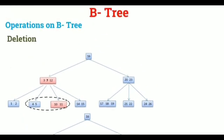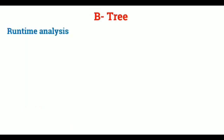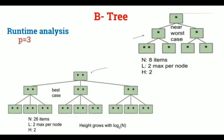Excellent. Now, you have known how operations can be done on B-tree. Now, let's analyze the runtime of B-tree. Here we have 2 trees. One is the best case and other is the worst case. And both the trees are of order 3.